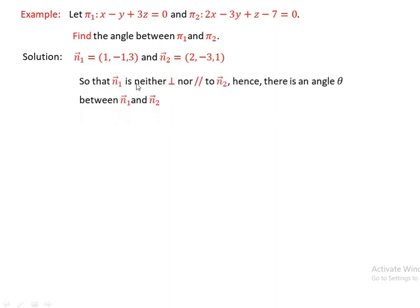Here n1 is neither perpendicular nor parallel to n2, so there is an angle between them. To find the angle between pi1 and pi2, that means the angle between the normal vectors n1 and n2, we use the formula: n1 dot n2 equals norm of n1 times norm of n2 times cosine of theta.